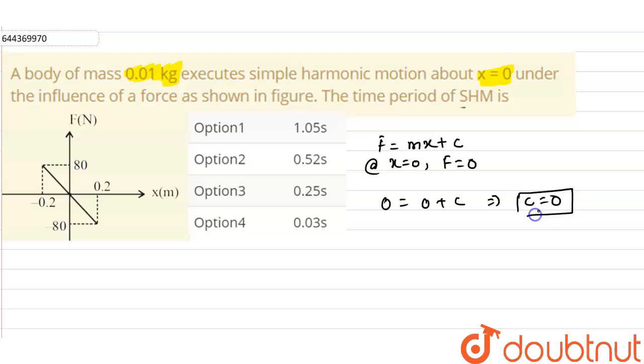So substituting, 0 equals 0 plus c, so from here we got c as 0. Now the second condition is at x equals 0.2, our force is minus 80.